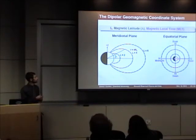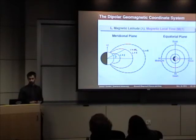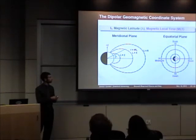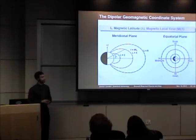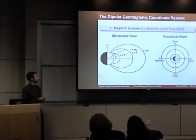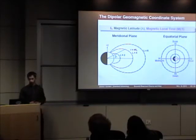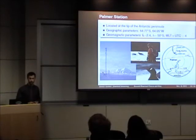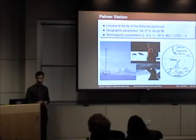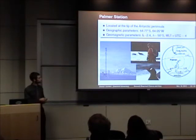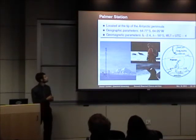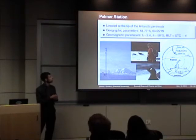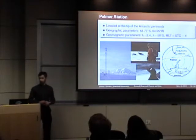The magnetic latitude is the angle between the geomagnetic equator and the point of interest on the field line. Moving to the equatorial plane, where the north geomagnetic pole points out of the page, magnetic local time in units of hours is defined as zero facing away from the sun, 12 or noon facing towards the sun, with all other hours in between. All data used in these studies is from our receiving station at Palmer Station Antarctica, which has geomagnetic parameters — most importantly an L-value of L equals 2.4.